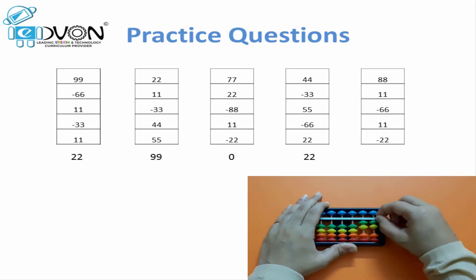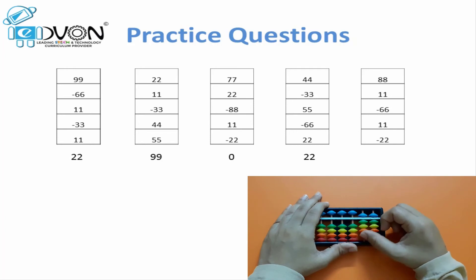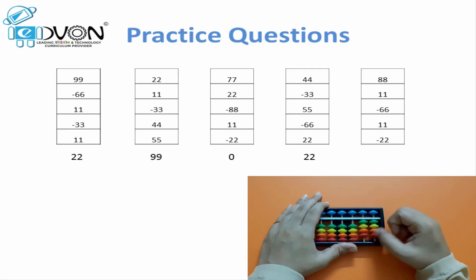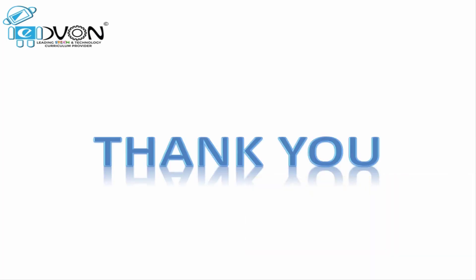Last question: 88 plus 11 minus 66 plus 11 minus 22. Answer: 22. Hopefully, the topic of similar values on abacus is clear to everyone. Thank you for watching the video and keep practicing for better speed and good finger movement.